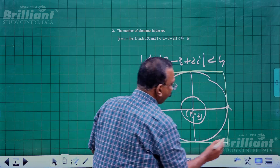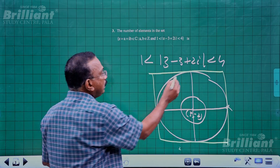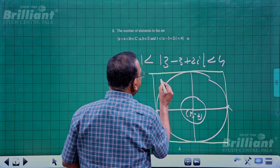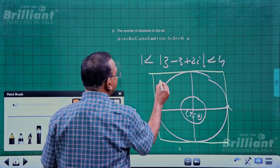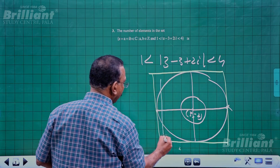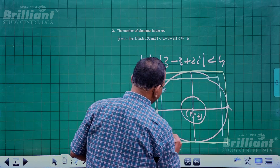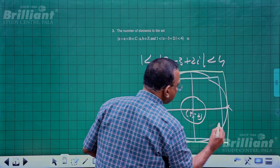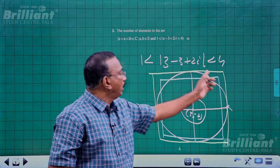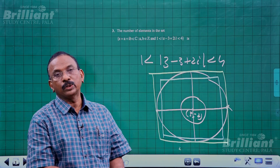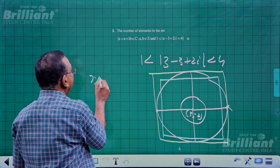The outer square has side length 8 units, and the inner square has side length 7 units after accounting for the boundary exclusion. The total count of integers inside the outer region is 7 × 7 = 49.